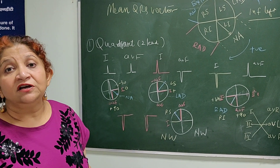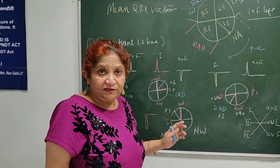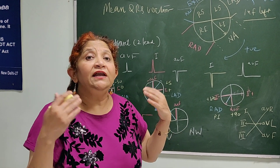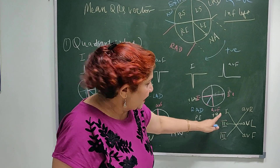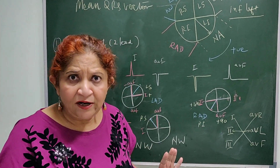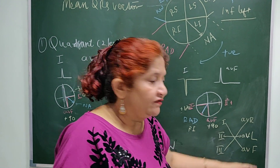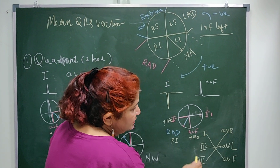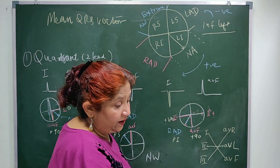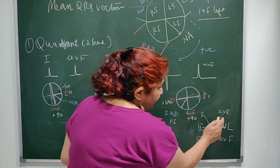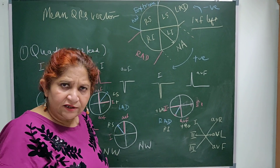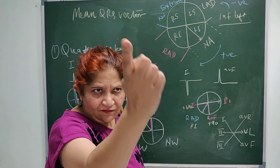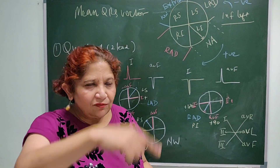One additional tip: to know which leads are perpendicular to each other, write Lead 1, 2, 3 on one side and AVR, AVL, AVF on the other side, then draw lines across. Lead 1 is perpendicular to AVF. AVR is perpendicular to Lead 3. Lead 2 and AVL are perpendicular to each other. This is very helpful when calculating axis by other methods.